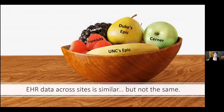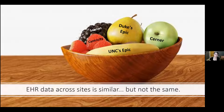EHR data, as many of you probably know, is very similar regardless of site — whether you're from a community hospital or an academic hospital. EHR data is about patients. Those patients have visits, and things happen at those visits. However, in terms of structure and vocabularies, they're just different enough to make harmonization very difficult. While I think all EHR data is fruit, some of that fruit is apples, some of it's pears, some of it's bananas. Even when it's the same EHR vendor — for example, UNC's implementation of Epic and Duke's implementation of Epic — we're 20 minutes down the road from each other.